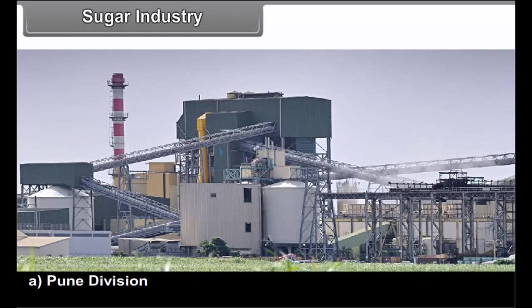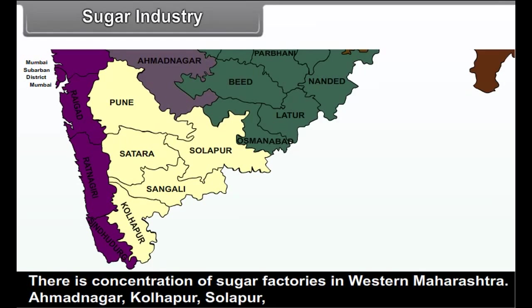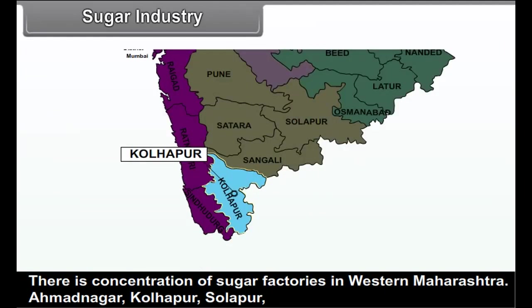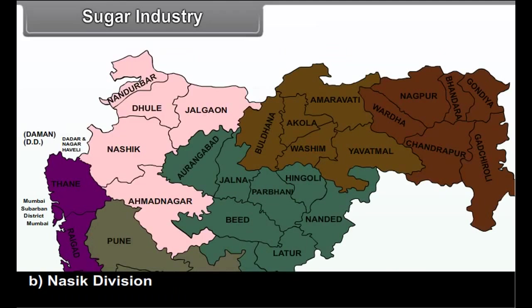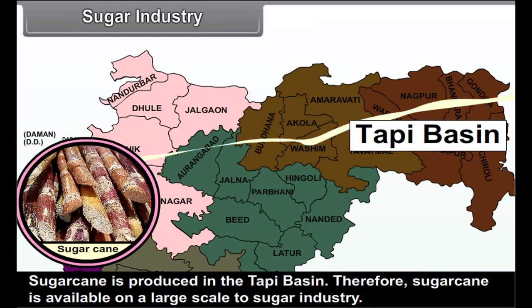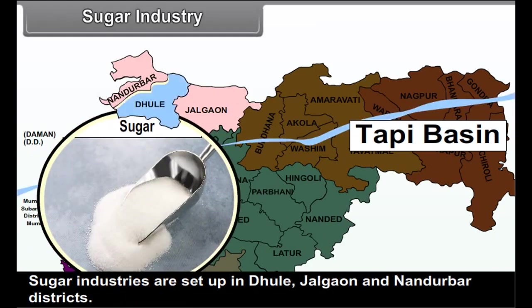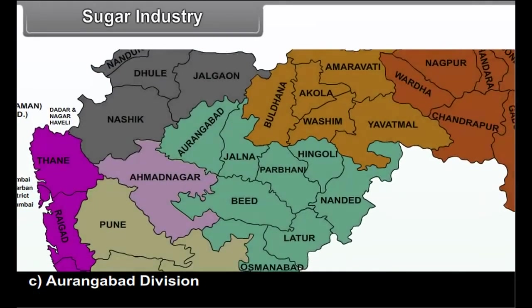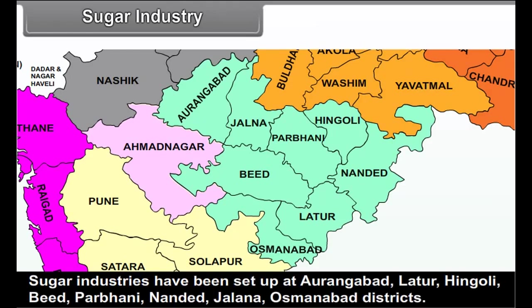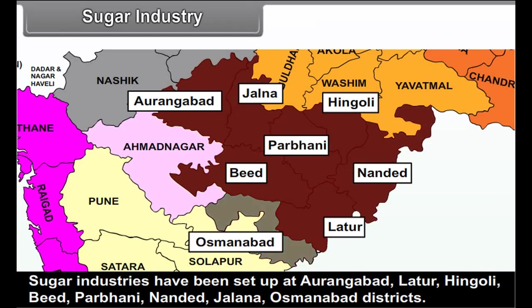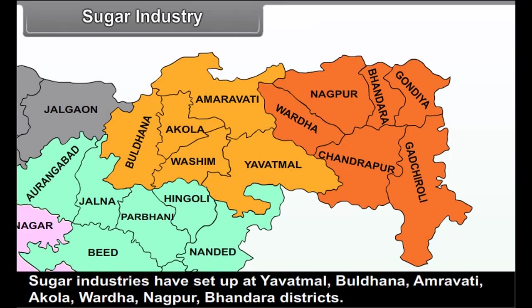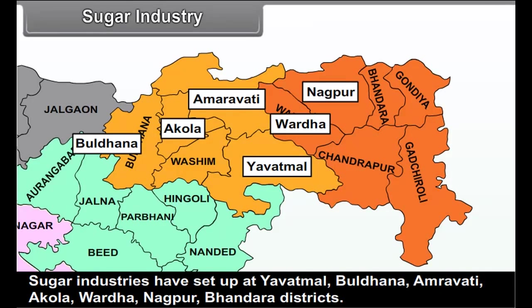Distribution of sugar industry: A. Pune Division - There is a concentration of sugar factories in Western Maharashtra. Ahmednagar, Kolhapur, Solapur, Pune and Sangli are the prominent districts which produce sugar. B. Nasik Division - Sugarcane is produced in the Tapi Basin, so sugarcane is available on a large scale. Sugar industries are set up in Dhule, Jalgaon and Nandurbar districts. C. Aurangabad Division - Sugar industries have been set up at Aurangabad, Latur, Hingoli, Beed, Parbhani, Nanded, Jalna and Osmanabad districts. D. Nagpur-Amravati Division - Sugar industries have been set up at Yavatmal, Buldana, Amravati, Akola, Wardha, Nagpur and Bhandara districts.